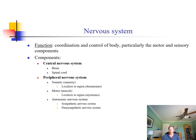The autonomic nervous system has two parts: the sympathetic nervous system, which is your fight-or-flight response, and the parasympathetic nervous system, which is your rest and relaxation. There are many different tasks to each of these that we'll talk about.